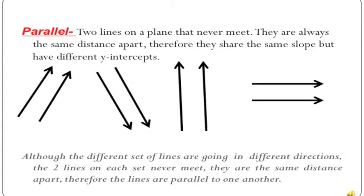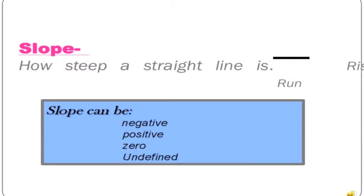Although the different sets of lines are going in different directions, the two lines in each set never meet. They are always the same distance apart. Therefore, the lines are parallel to one another.